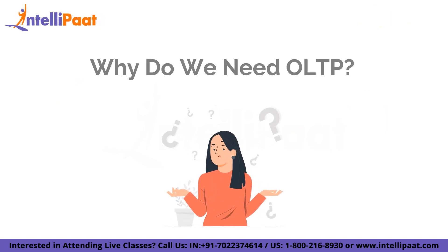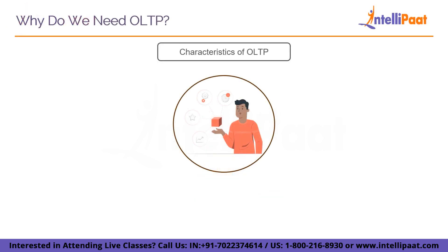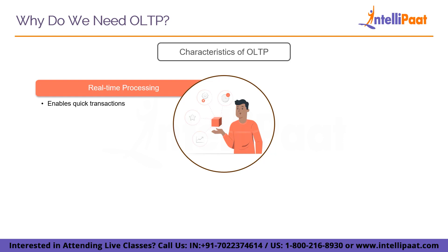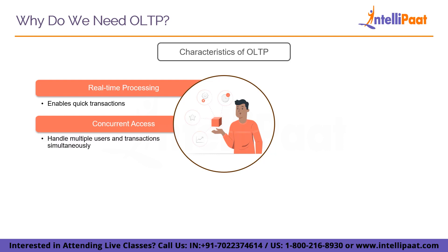Now we know what OLTP is and what it does — but why do we really need it? The answer lies in the characteristics of OLTP. OLTP systems are designed to process data in real-time or near real-time. When a user makes a request, the system reacts quickly, ensuring that transactions are completed as fast as possible. OLTP systems are also built to support several concurrent users and transactions without causing conflict, assuring that numerous users can interact with the system simultaneously without affecting each other's data.